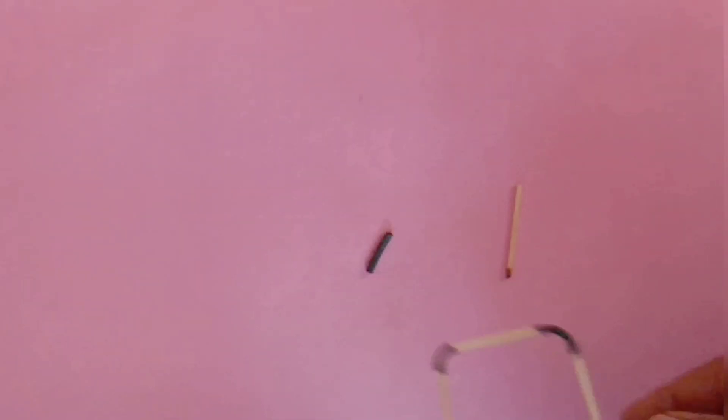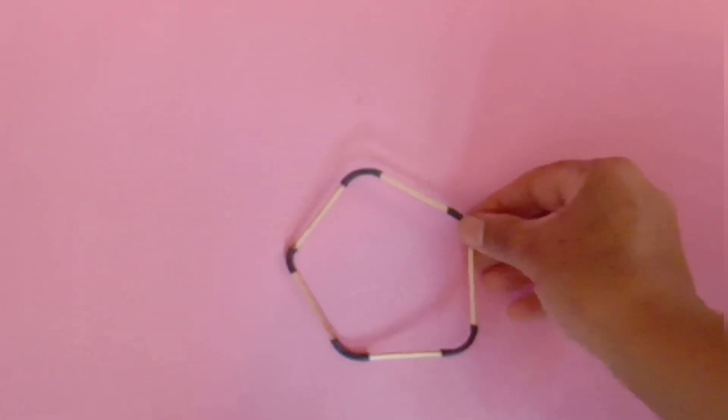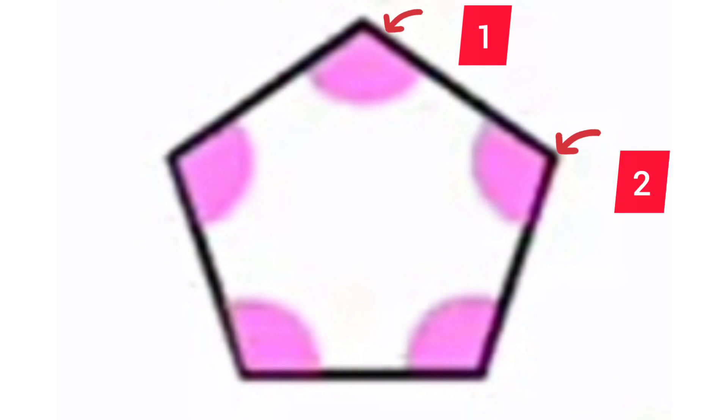Now we will make one more figure of five sides by adding one more matchstick and a valve of cycle tube. Our figure looks like this. Let's see how many angles are there in this figure: 1, 2, 3, 4, and 5.